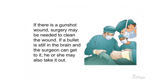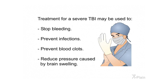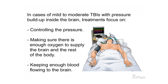If there is a gunshot wound, surgery may be needed to clean the wound. If a bullet is still in the brain and the surgeon can reach it, he or she may also remove it. Treatment for a severe TBI may be used to stop bleeding, prevent infections, prevent blood clots, and reduce pressure caused by brain swelling. In cases of mild to moderate TBIs with pressure buildup, treatments focus on controlling the pressure, ensuring enough oxygen supply to the brain and body, and keeping sufficient blood flowing to the brain.